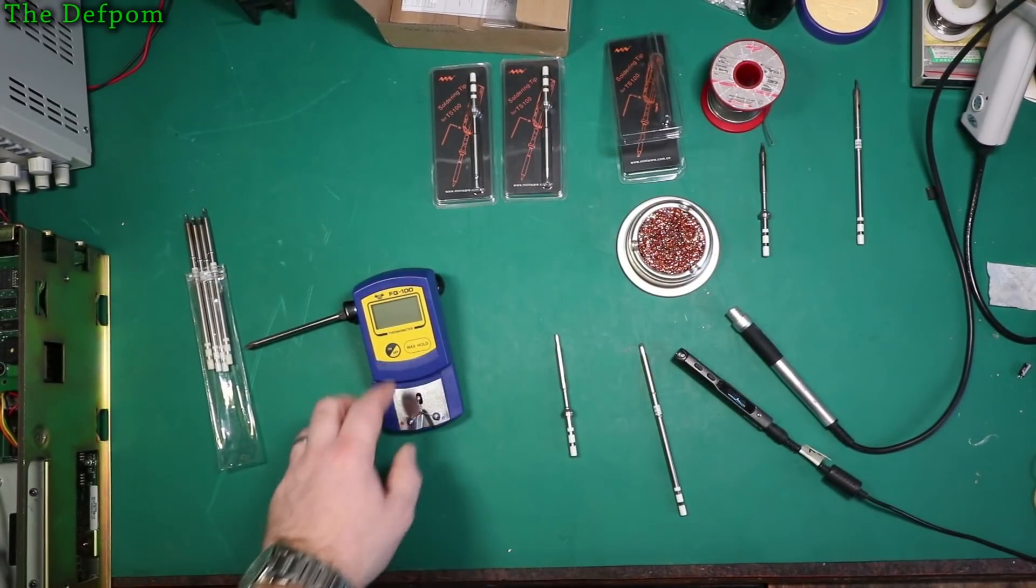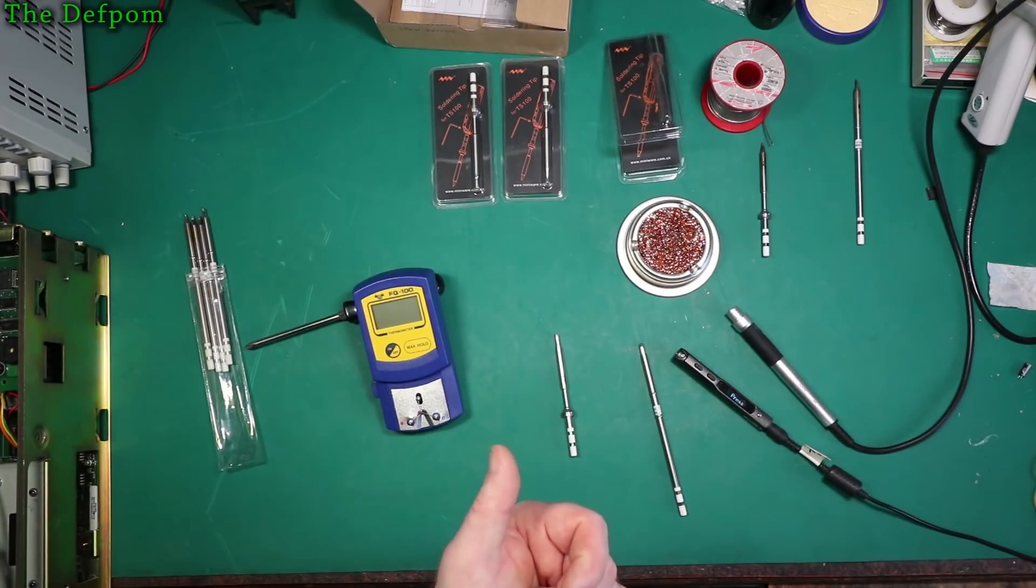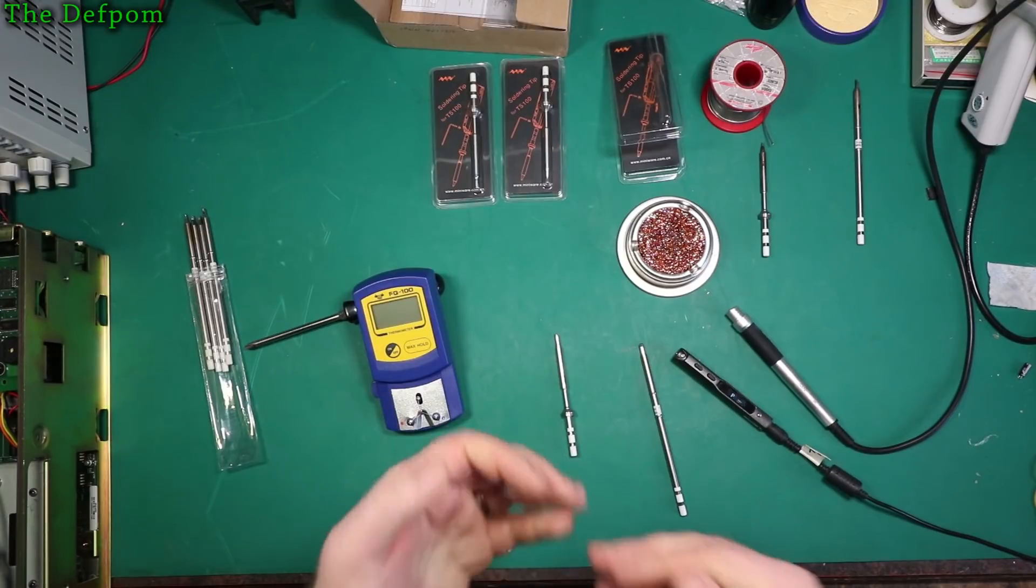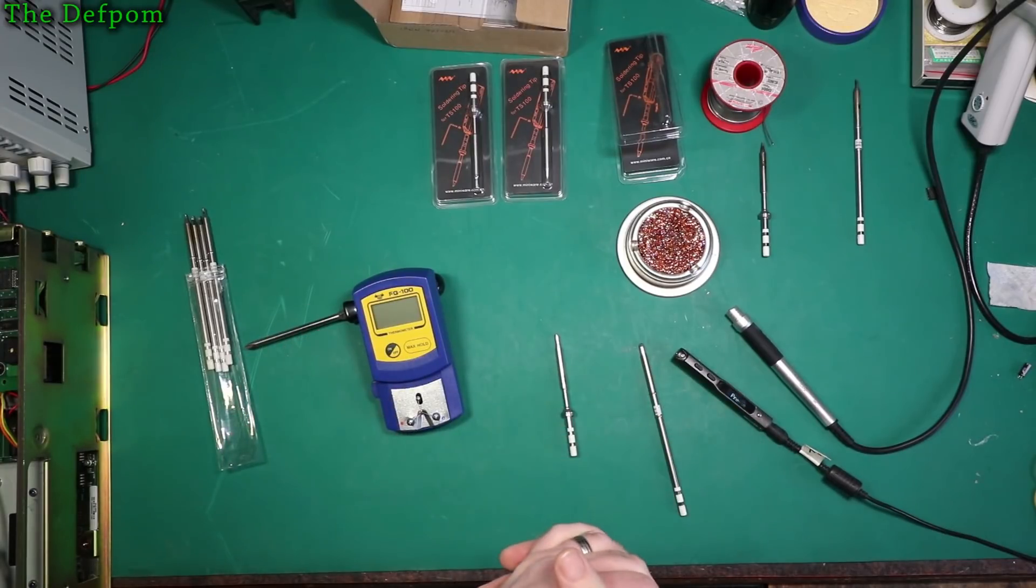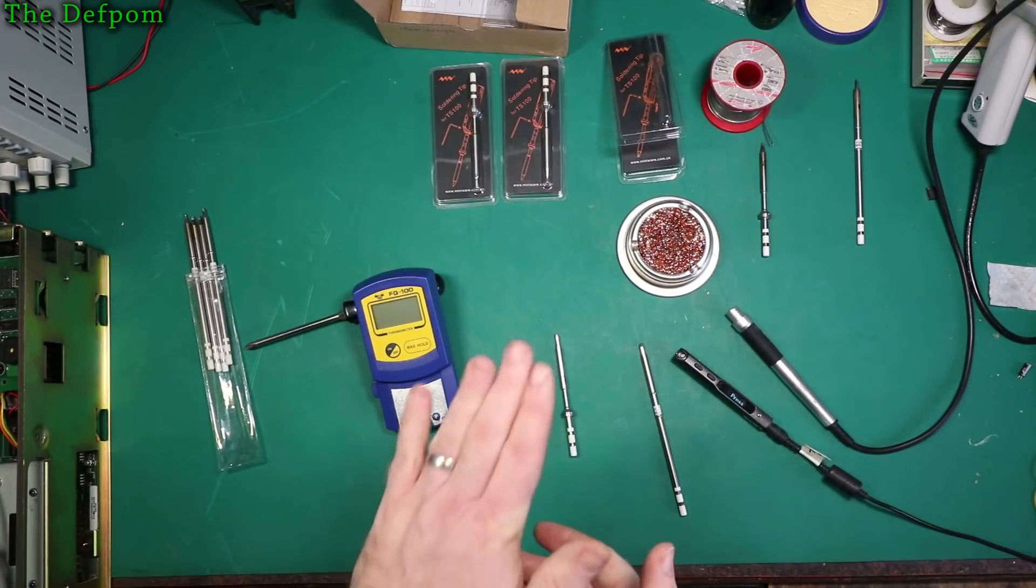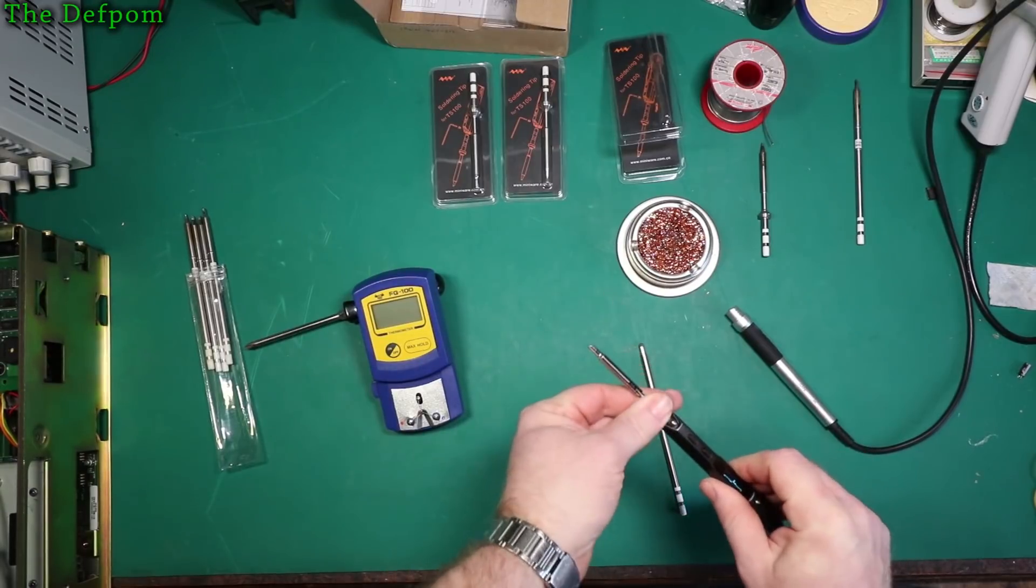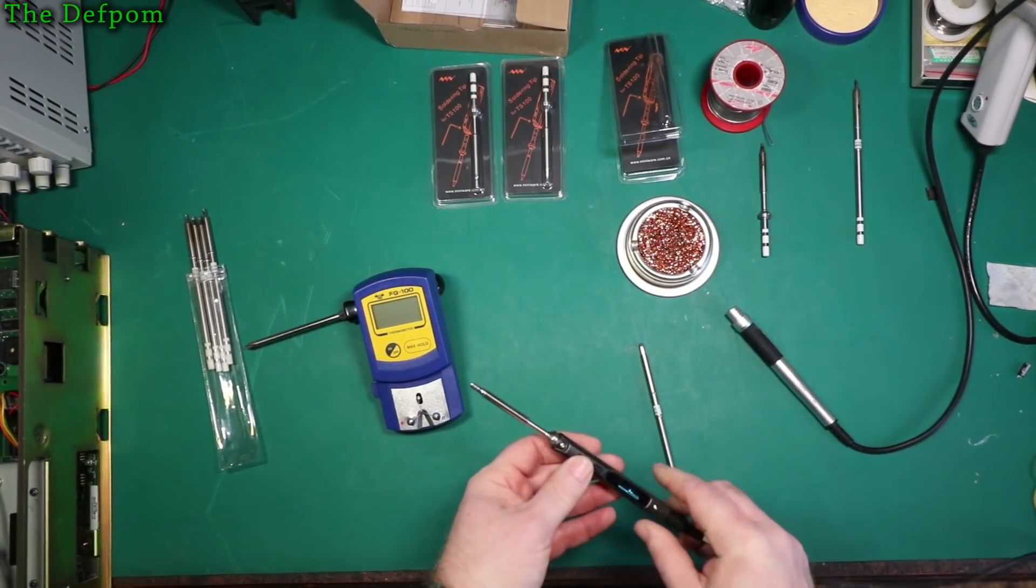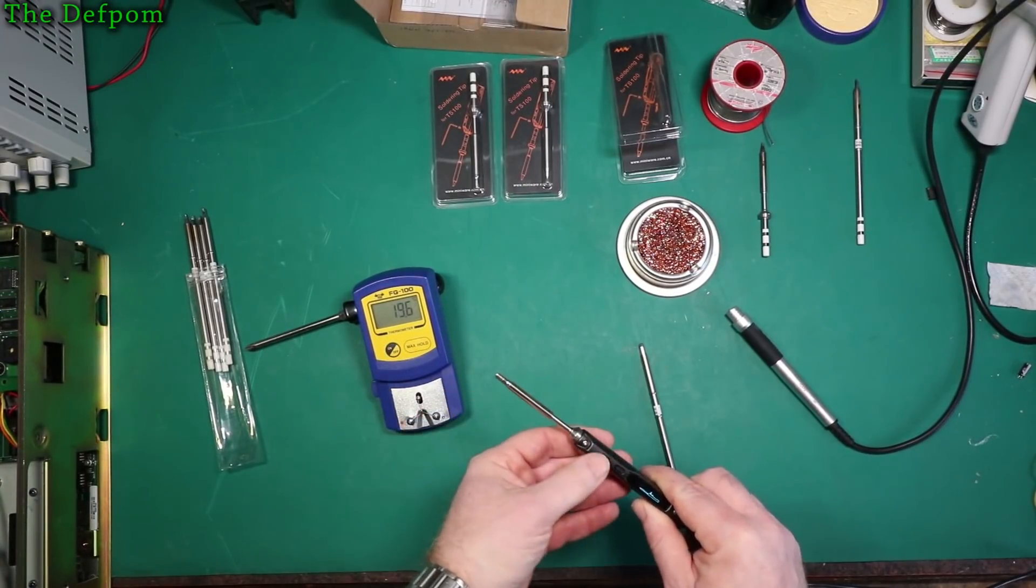So I've got my tester here and I'll chuck the tip in there. We'll get some solder on it. Then after we get an accuracy test done, we'll set both irons to be the same accuracy, the actual temperature.